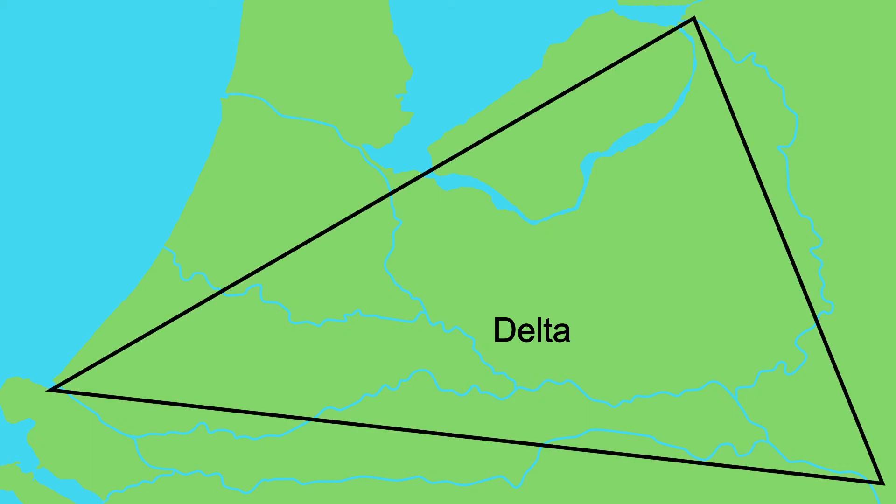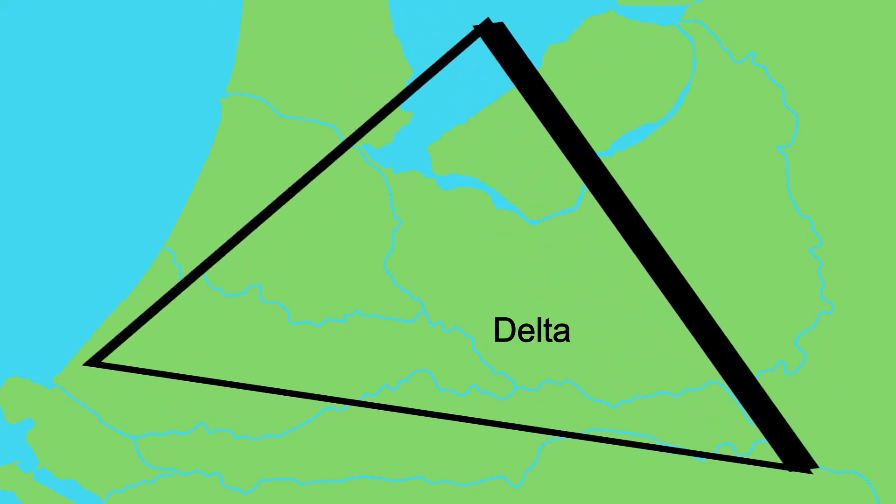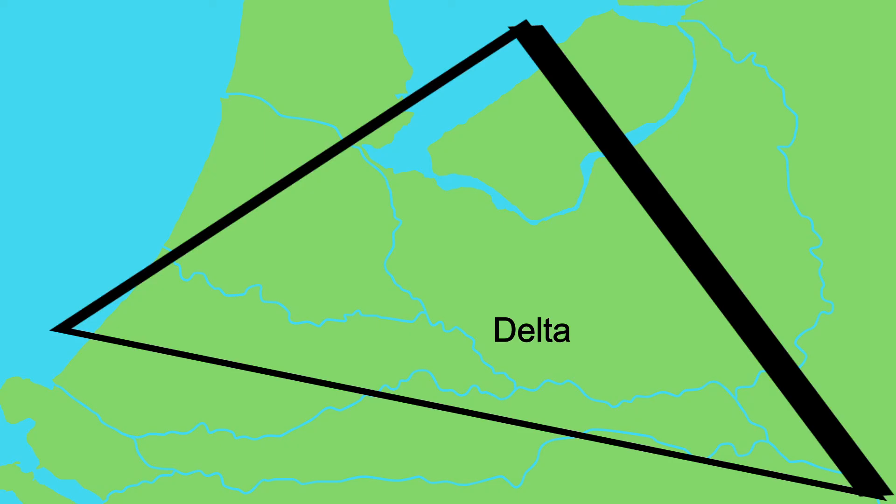Because the rivers in the lower regions often split into all kinds of branches, we call this the river delta. These branches together have the shape of a triangle, which looks like the letter delta in Greek. In the river delta, a lot of sediments sink to the bottom. These sediments often ensure that the land is fertile, causing high agricultural yields.